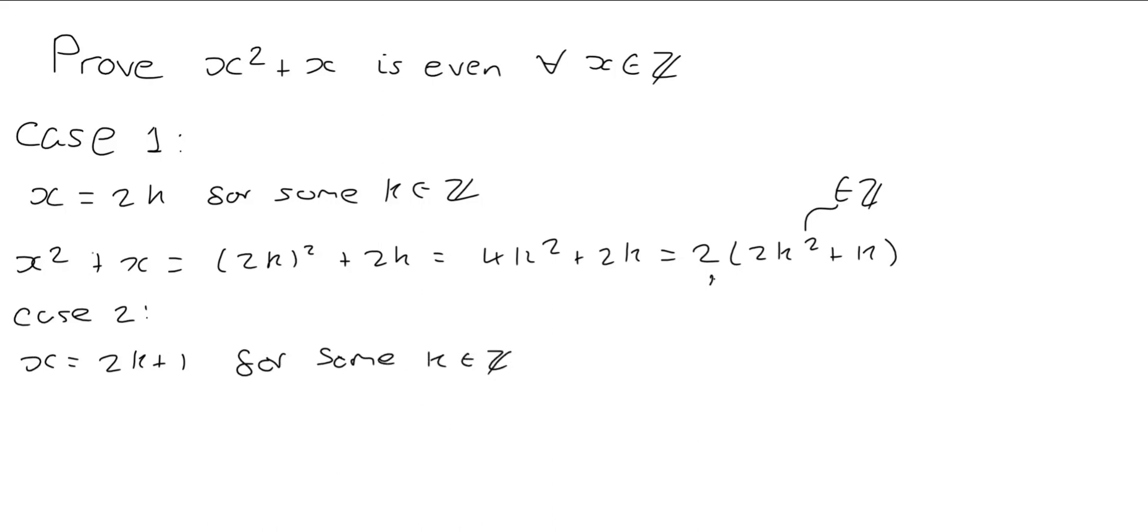And we'll run through the same calculation. So we're going to get x squared plus x and that's 2k plus 1 squared plus 2k plus 1. And with a bit of algebra we'll look to show that this is even.